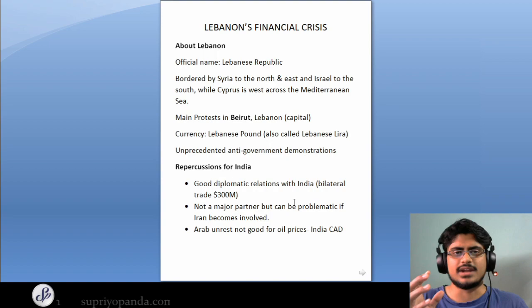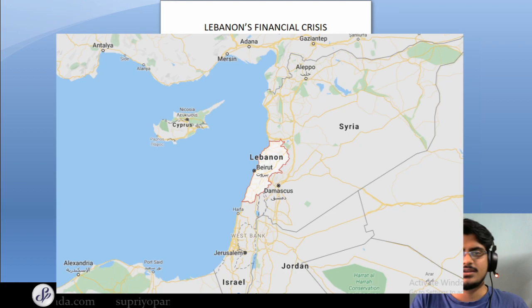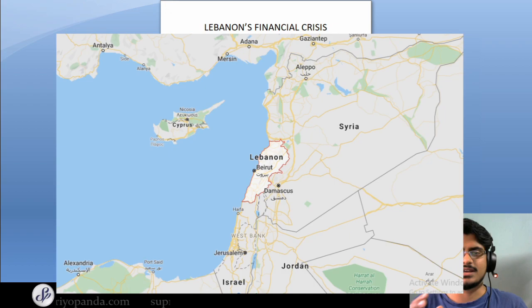The first thing about Lebanon you have to understand is its geographical location. The official name of Lebanon is the Lebanese Republic. Lebanon is bordered by Syria to the north and to the east, and it is bordered by Israel to the south. On the west it has the Mediterranean Sea, and you can see a small island — Cyprus — that's to the west of the country across the Mediterranean Sea.